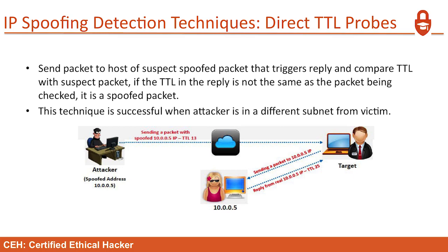IP spoofing detection techniques: we use direct TTL probes — time-to-live probes. You send a packet to the host of the suspected spoofed packet that triggers a reply, and compare the two TTLs — they should take approximately the same amount of time. If you've got a connection coming in from China, you can ping and see what the TTLs look like. They should be close to each other; if they're not, that's a problem. This technique is successful when the attacker is in a different subnet from the victim — it's very effective.